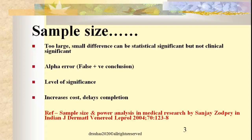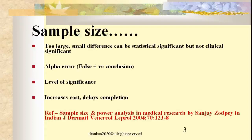This article explains the fundamentals of sample size in a simple manner and describes four important methods for calculating it. The four methods include formulas appropriate based on the study design. These formulas are not the same for all types of study designs — for a cohort study, the formula is different, and for an intervention study, the formula is also different.